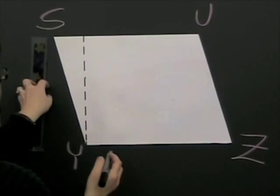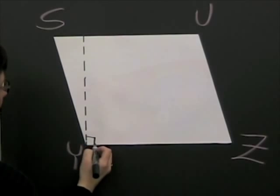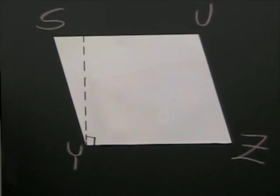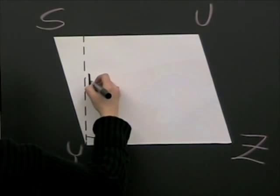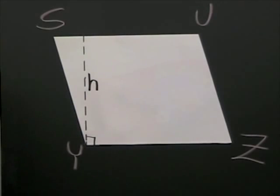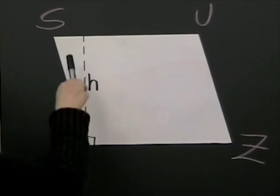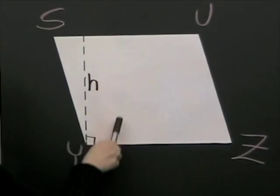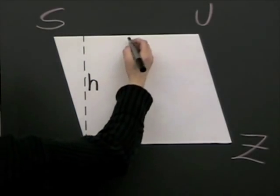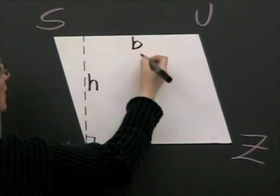And that segment, as you can see, 90 degree angle, that segment right there will represent the height of parallelogram Susie. So, I'm going to put an H for height.